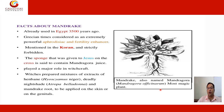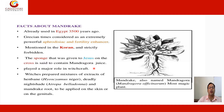Fact about Mandrake: Mandrake, also named Mandora or Mandragora, is considered the most magical plant. It was early used in Egypt 3,500 years ago. Grecian scholars considered it an extremely powerful aphrodisiac and fertility enhancer. It is mentioned in historical texts and strictly referenced in scripture. The drink given to Jesus on the cross is said to contain Mandragora juice. It played a major role in witchcraft — witches prepared mixtures of extract of henbane, psilocybin, deadly nightshade, Atropa belladonna, and mandrake root to be applied on the skin or genital organs.